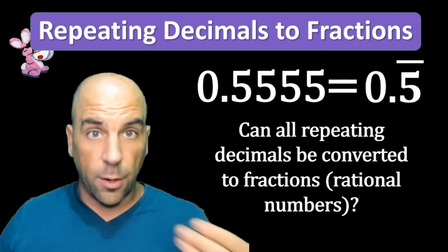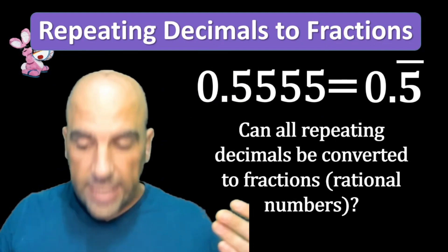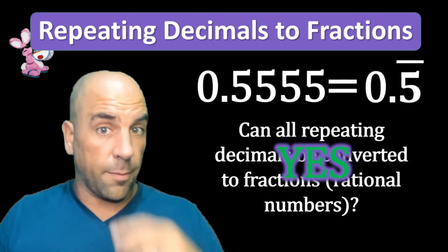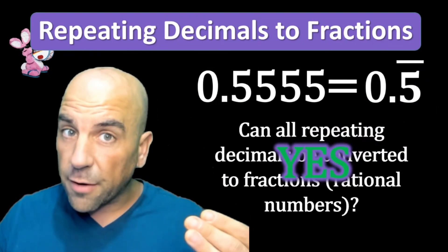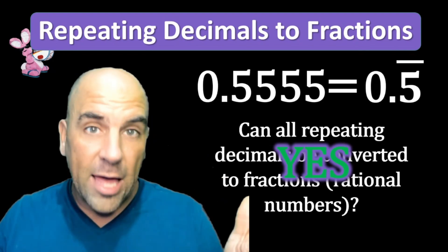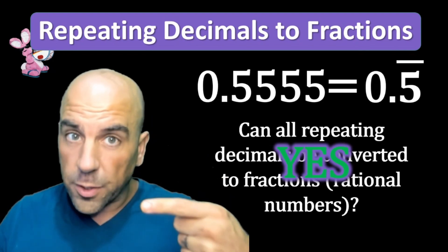Yes, all of them are rational numbers. Remember, the only thing that's not a rational number that can't be a fraction are numbers like pi, where the decimal doesn't repeat and doesn't terminate or end.